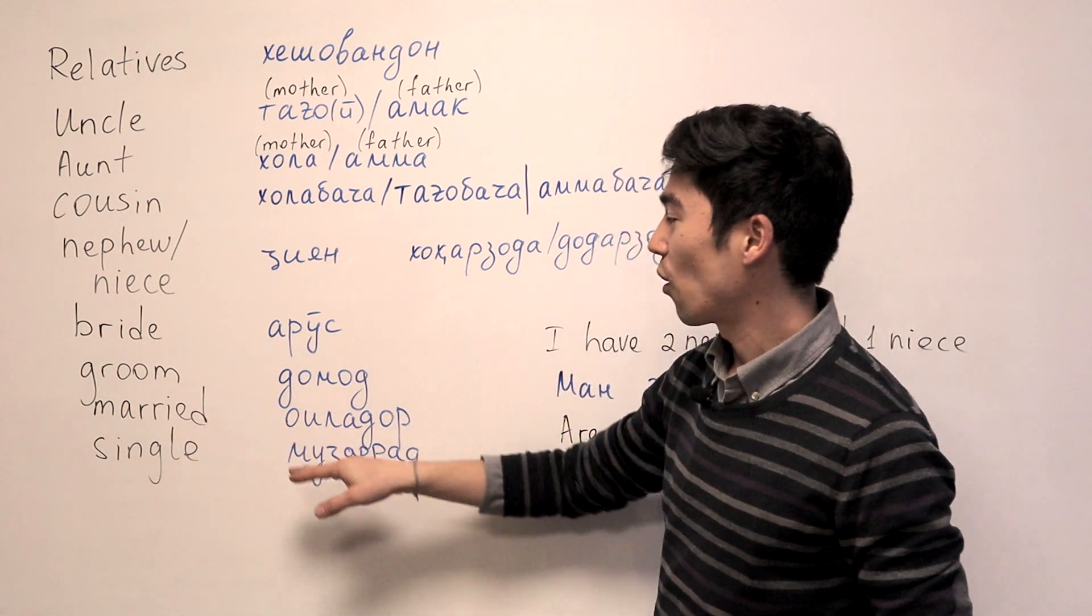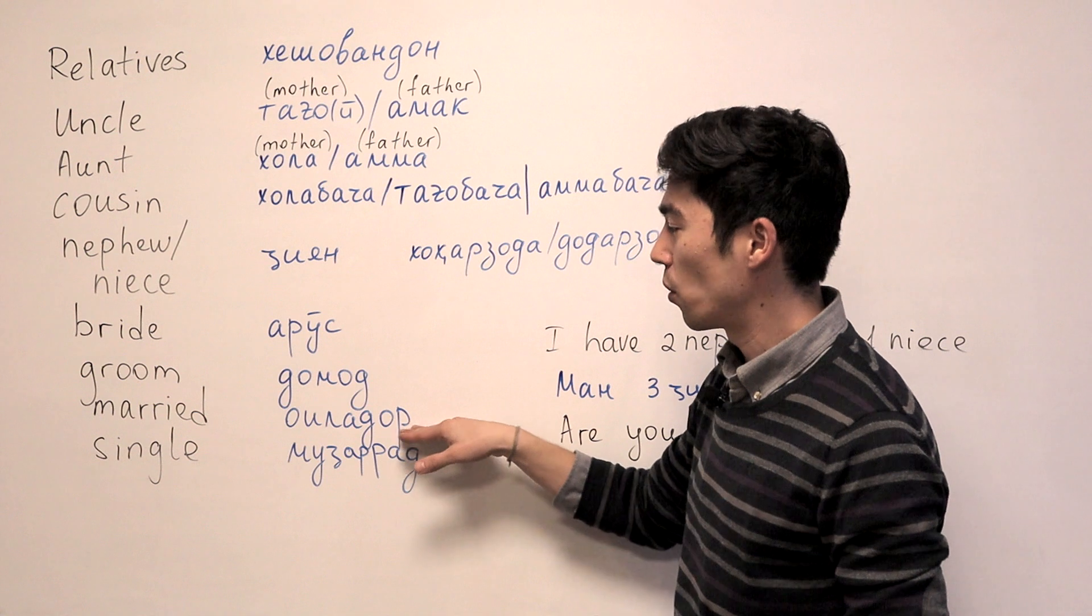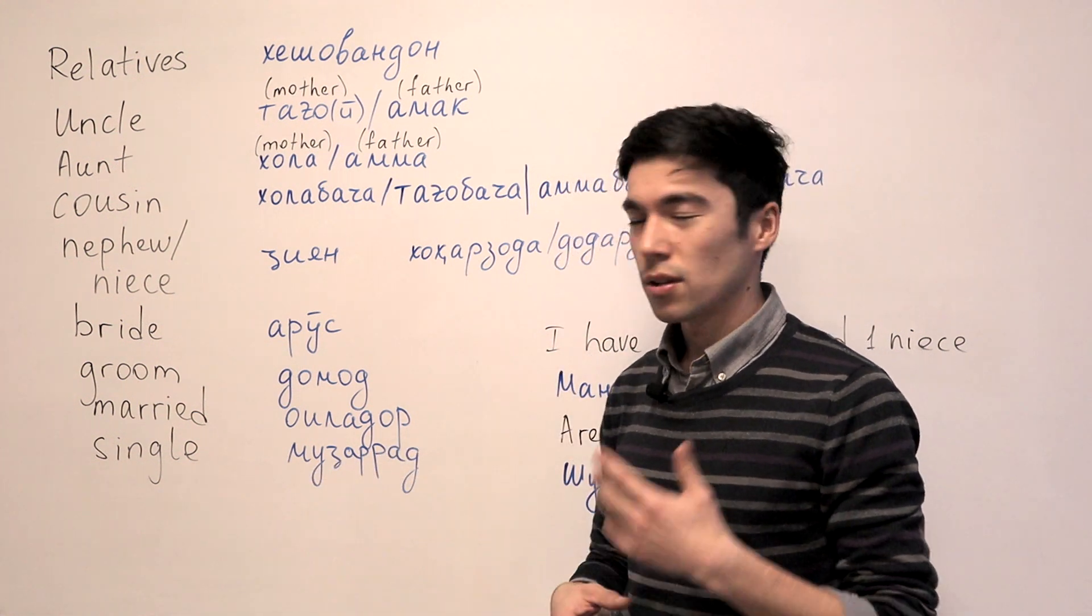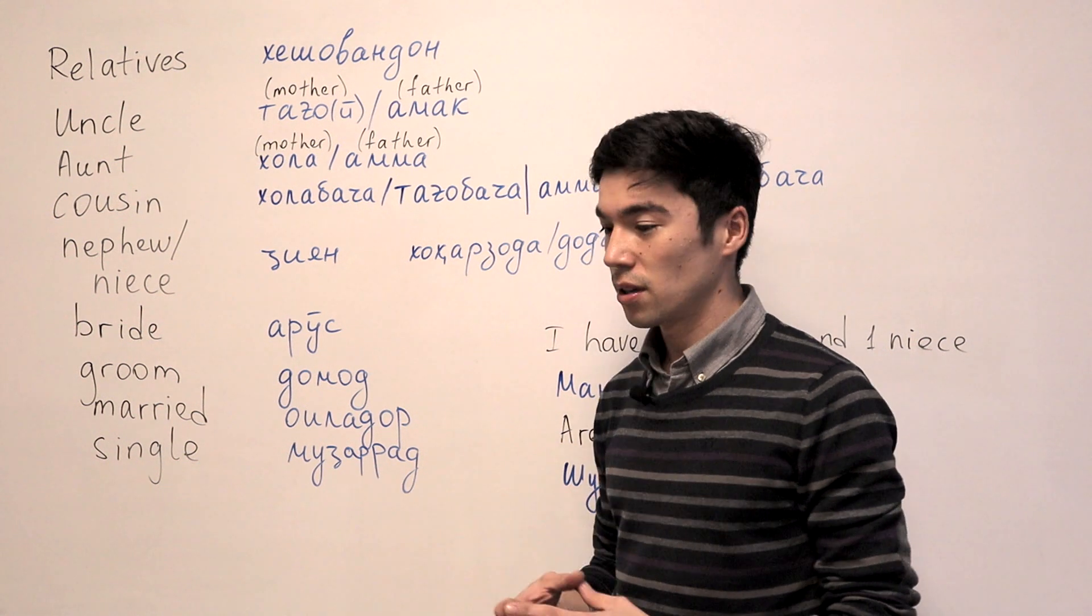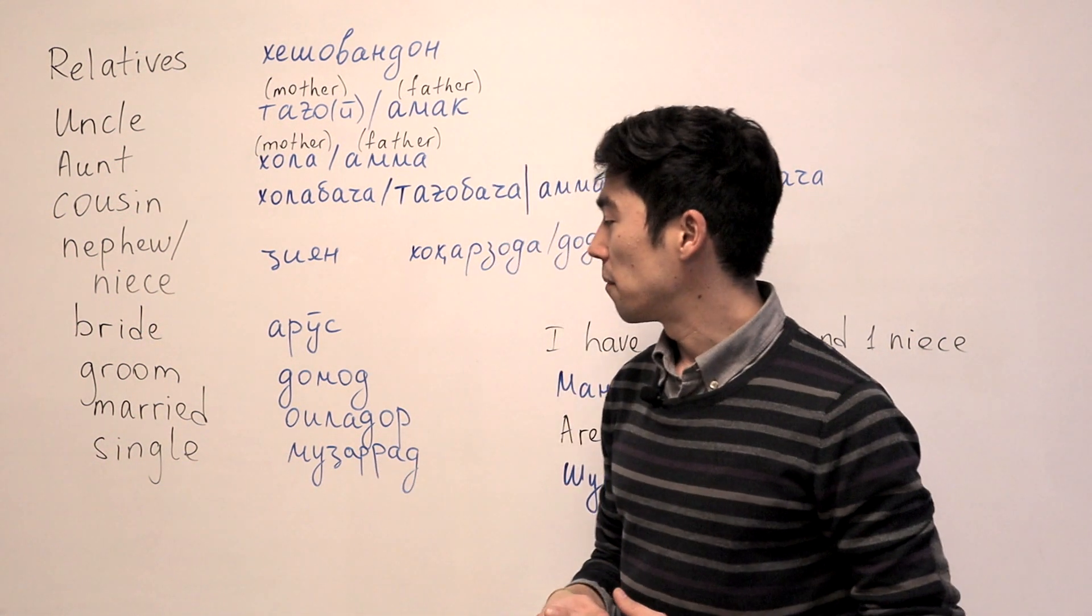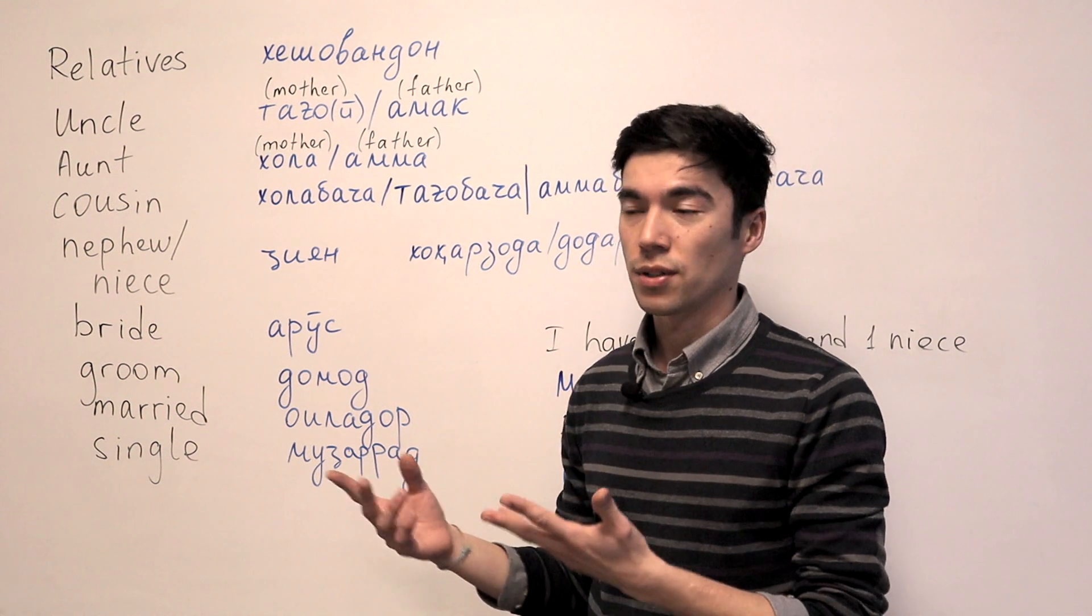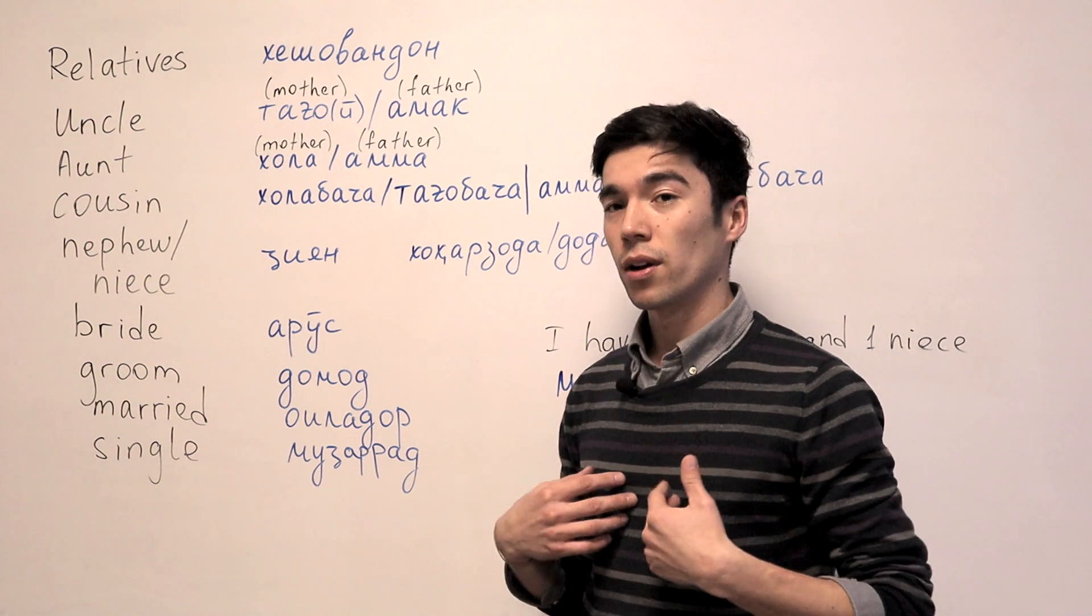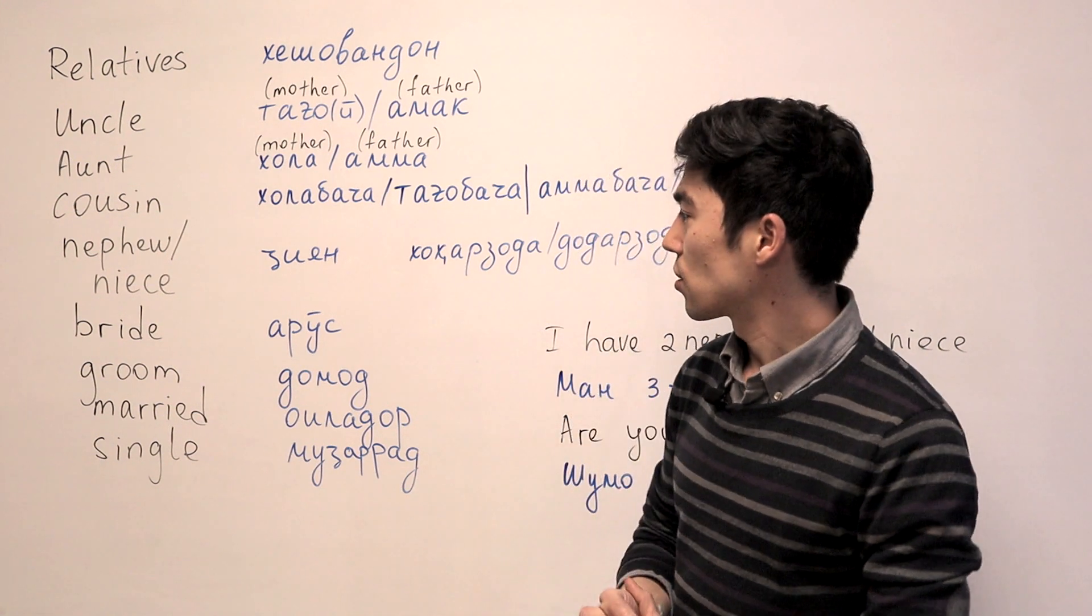Married means Oylador. And single will be Mujarat. But we don't usually say Mujarat. That's really very, very formal. We usually say Oylador ne. For example, I'm not married. I say Man Oylador ne.